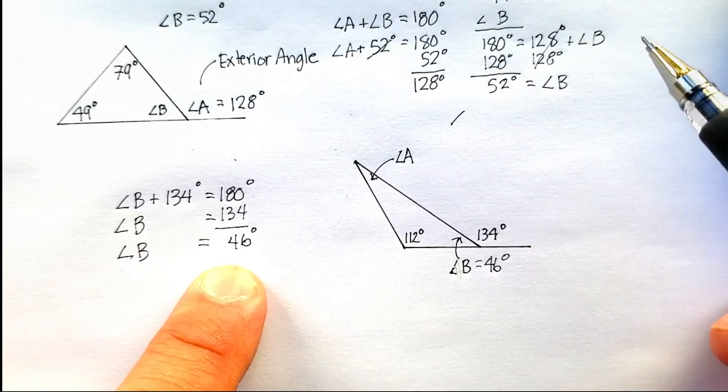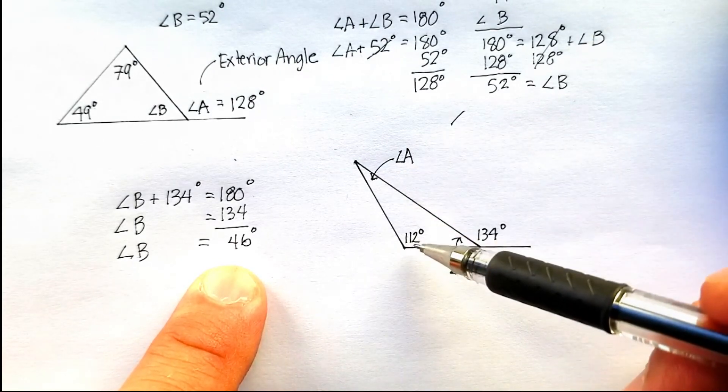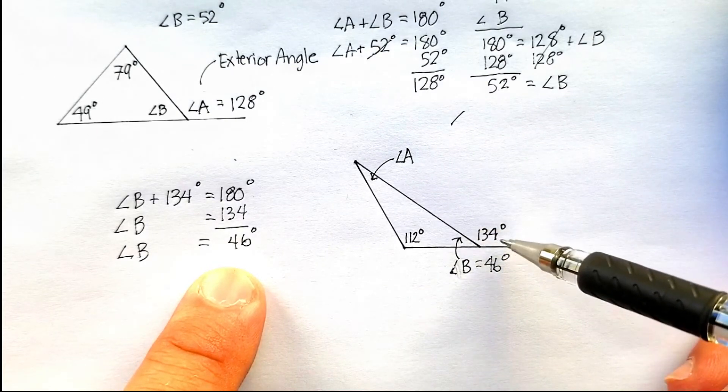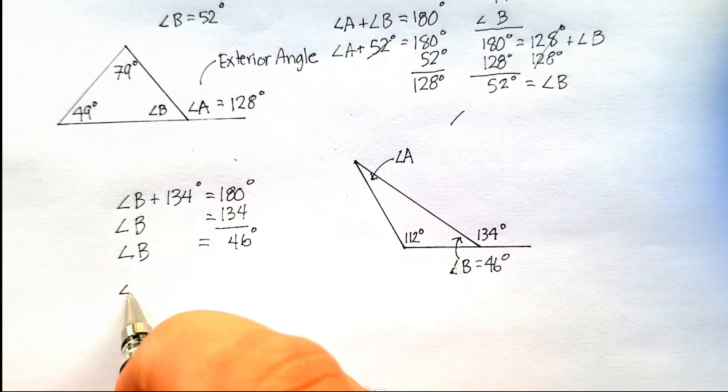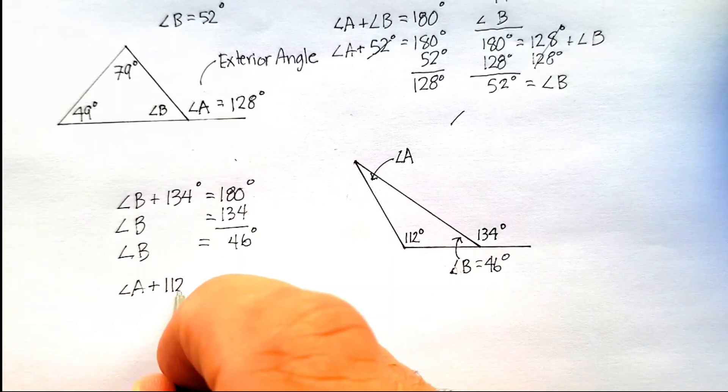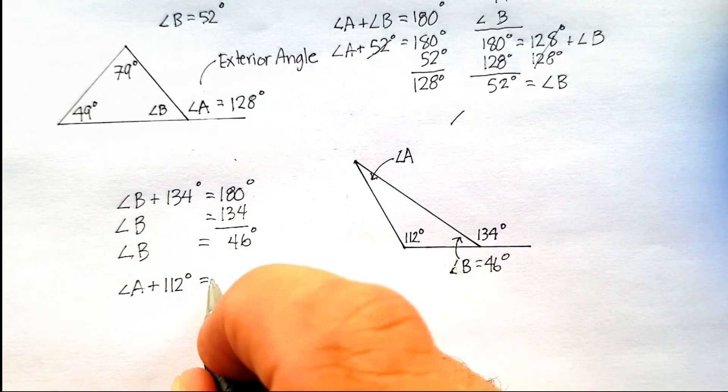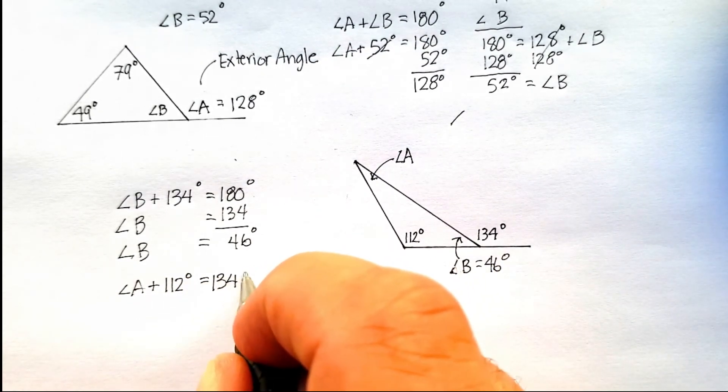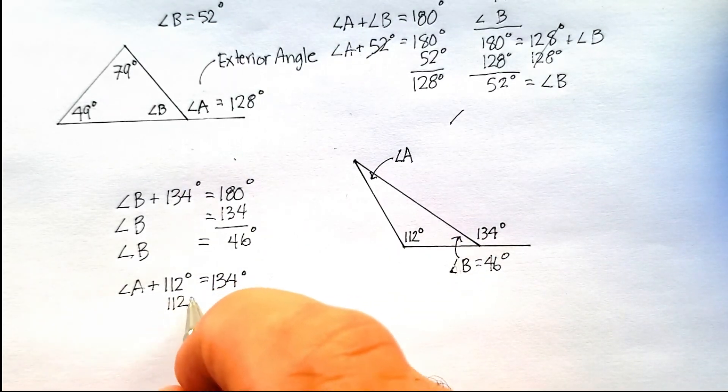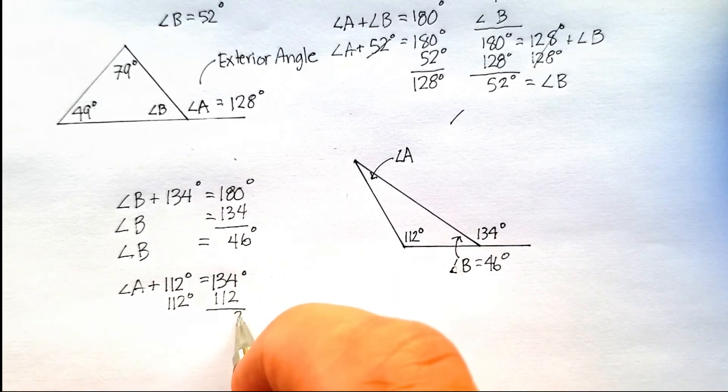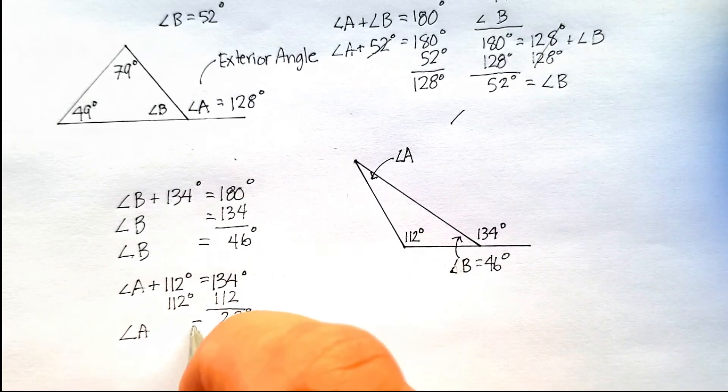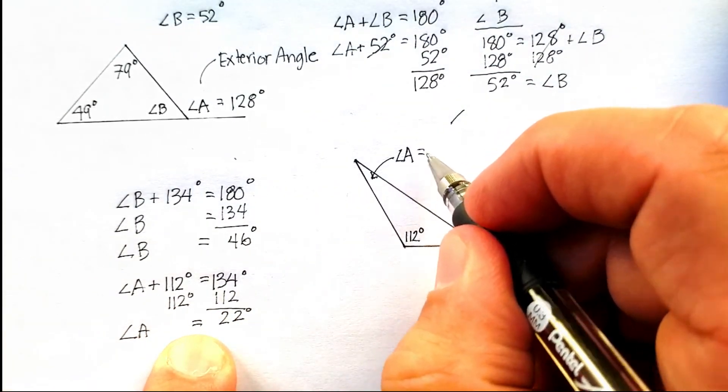Now I also know that angle A and angle 112 should be equal to angle exterior angle 134. So let's try that. Angle A plus 112 should be equal to 134. That's according to my exterior angle theorem. Let's subtract 112 from both sides, which means that angle A should be equal to 22 degrees.